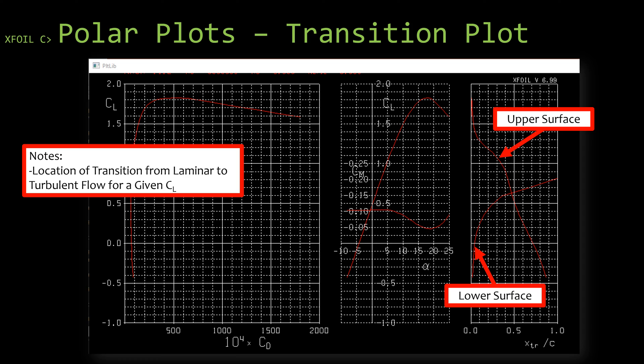So the last plot in the polar plots that XFOIL creates is a transition plot. So this would be showing where on the chord that the flow transitions from laminar to turbulent for a given coefficient of lift. So the coefficient of lift is actually the y-axis in all three plots, not including the moment coefficient plot. Now the x-axis would be the location on the chord.